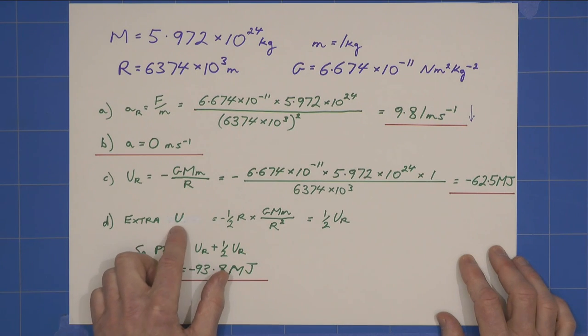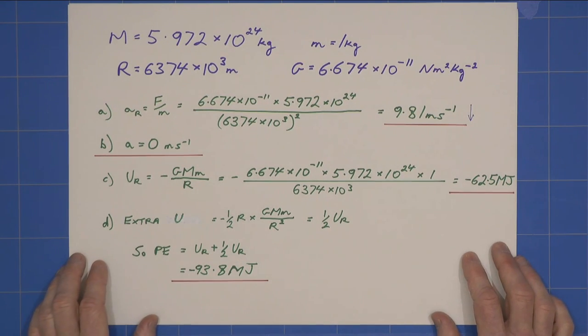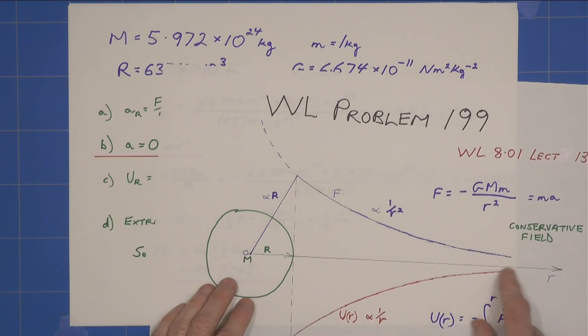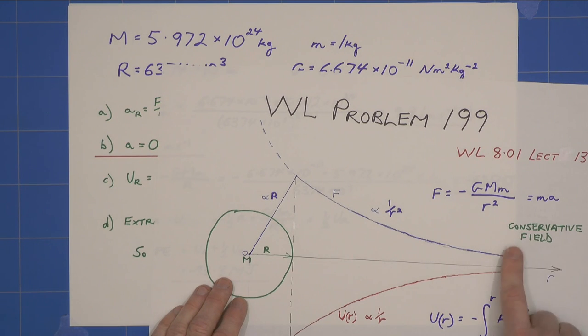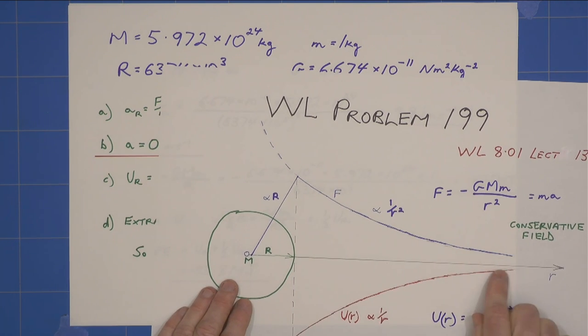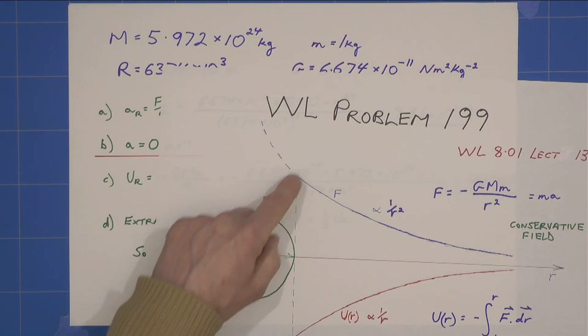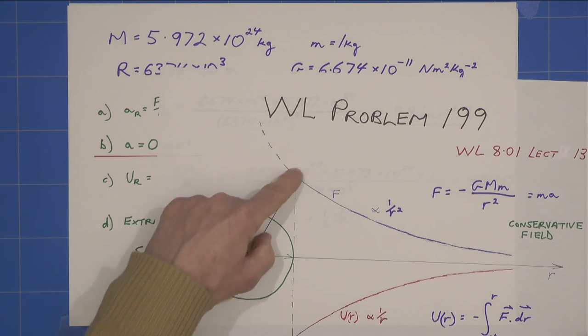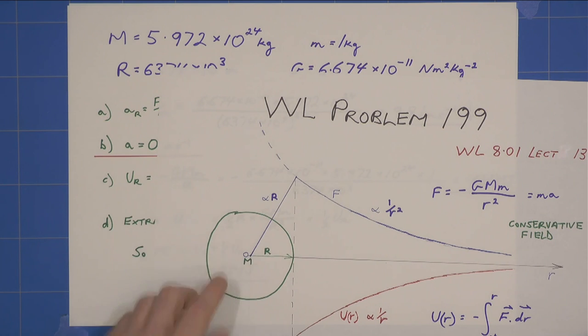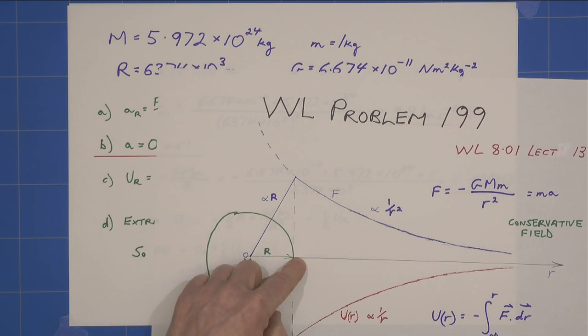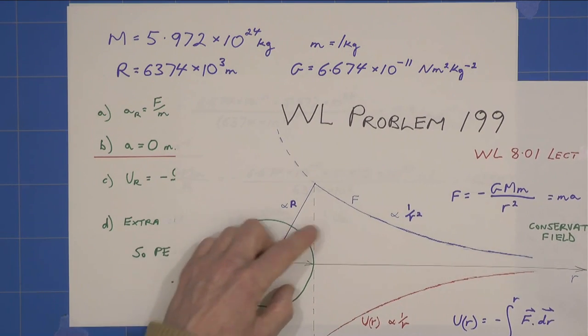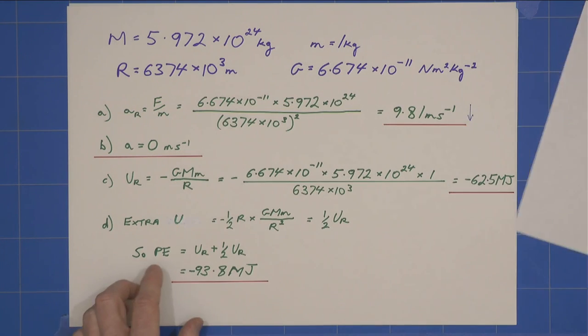And then the extra potential energy is this little bit here. If you think about it, as we move here, we're integrating, we're summing the area here, and that's the value here. So, in other words, at this, if we totted up all that area, we would get this potential energy. And similarly, I can say, well, the extra potential energy is just that area there, R times that height. You could do the integral, but it's just as easy to see it. It's half of the value we've got here.